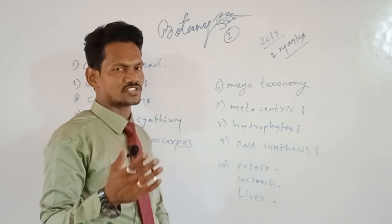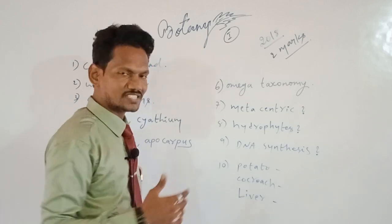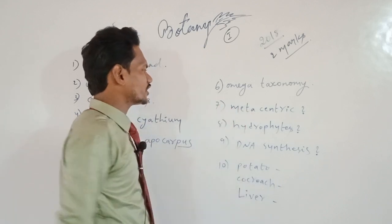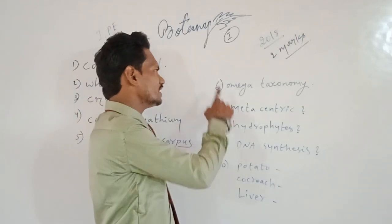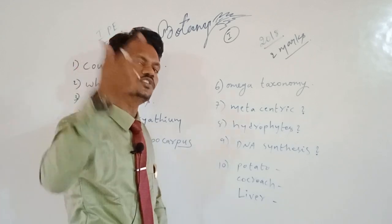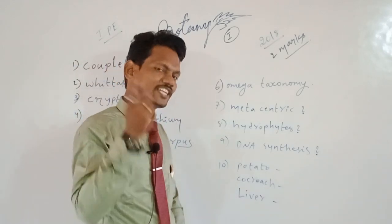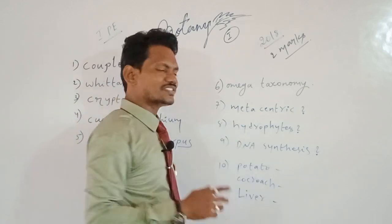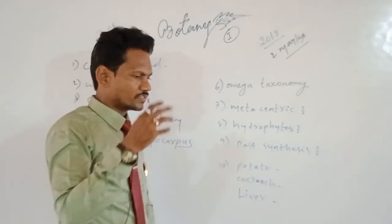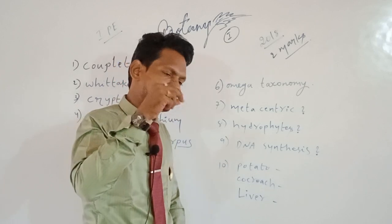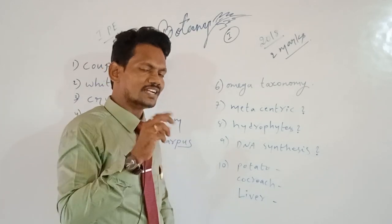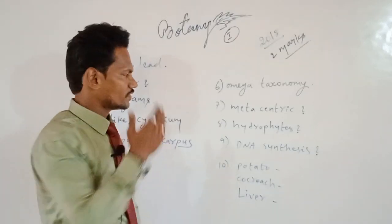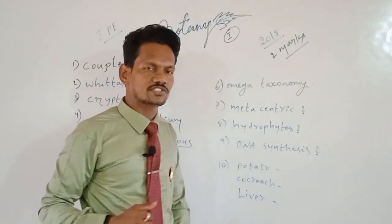Next question: the feature of a metacentric chromosome. This question was raised in the 2023 paper as well. The feature of a metacentric chromosome is that the centromere is exactly located at the middle of the chromosome, and it looks like the letter V in shape.